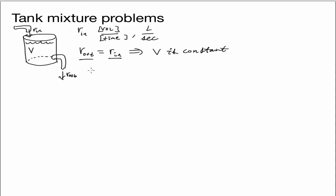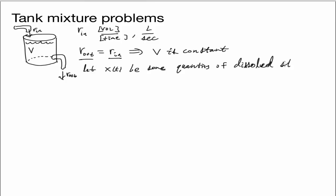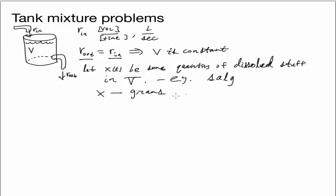On top of that, we're going to let x(t) be some quantity of dissolved substance in the volume V. The classic example is salt, so the quantity x would be in grams — specifically, grams of salt. So inside the tank there are x(t) grams of salt.